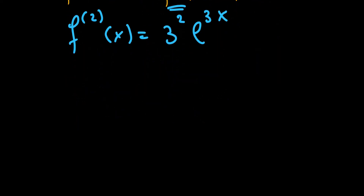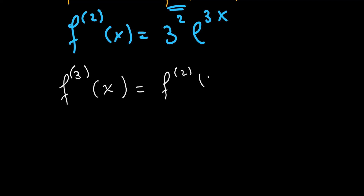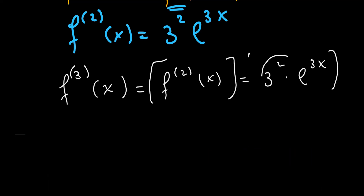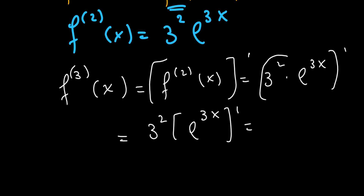Now for the nth derivative, where n is just a natural number. If we differentiate for the third time: the third derivative is the derivative of the second derivative, d/dx of 3² · e^(3x). Since 3² is a constant, it is taken out of the differentiation. The derivative of e^(3x) by the chain rule gives 3 · e^(3x). So we get 3² times 3 times e^(3x), which is 3³ · e^(3x).